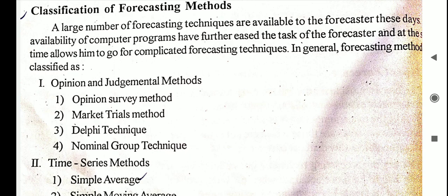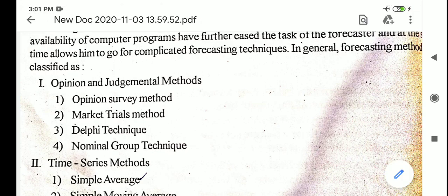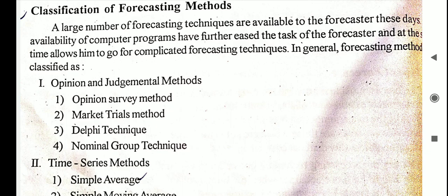Some of the judgmental or qualitative techniques are: first is opinion survey or market research method. Opinion survey method is a relatively simple and practical method for forecasting demands, especially for new products. In this method, opinions are collected from prospective buyers regarding why they buy a particular product and what they expect from the product.